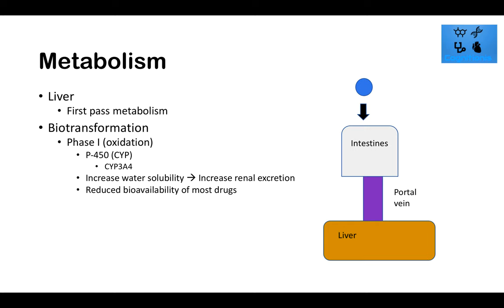In Phase I, we are reducing the bioavailability of the drug — less of it will be able to perform its function because it's no longer in its original form. That's why taking something orally reduces bioavailability: it goes into the intestines, through the portal vein, to the liver, where it undergoes metabolism that decreases bioavailability.